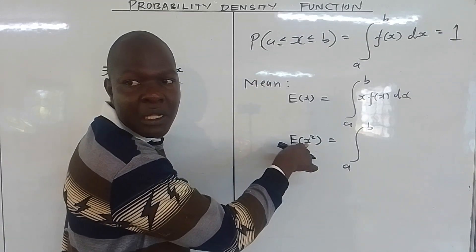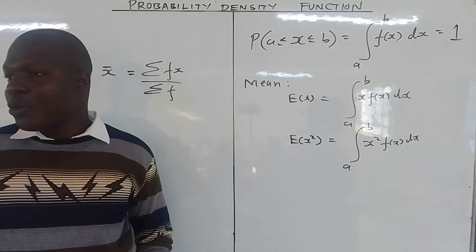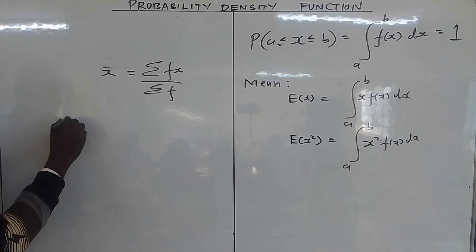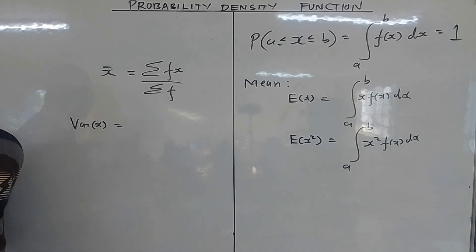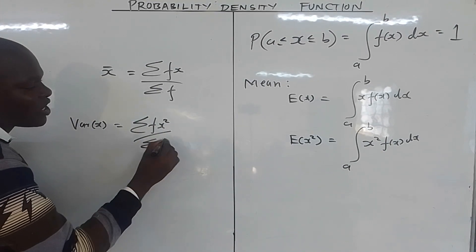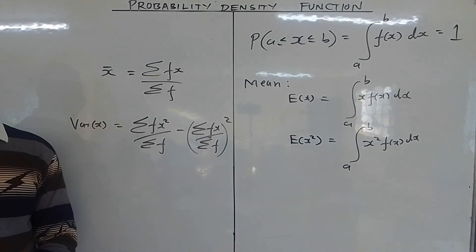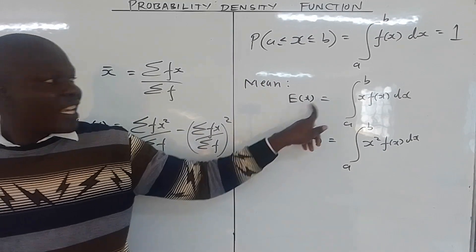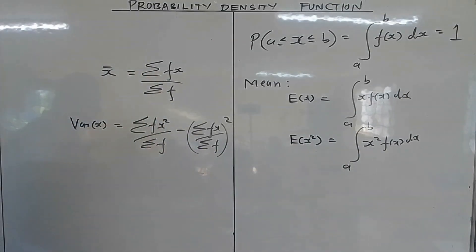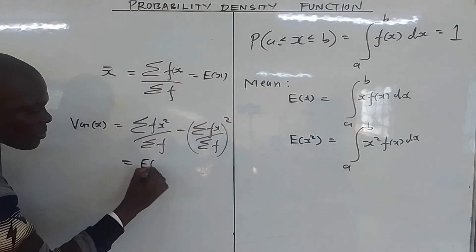For the expected value of x squared, you integrate x squared times f(x) dx over the whole range. Similarly if it is x cubed, it is x cubed times the probability density function. Now if you look at the variance — in the discrete random variable, the variance was given by summation of f(x) squared over summation of f, minus the mean squared. So the variance is the expected value of x squared minus the mean squared.